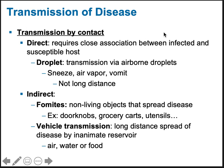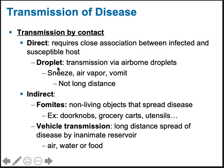Types of transmission: direct contact includes exchange of bodily fluids, touching, or close proximity inhalation of droplets — sneezes, air vapor from talking, even vomit releases droplets into the air. You have to be in close proximity, so it's not long distance. Indirect transmission can be long distance.